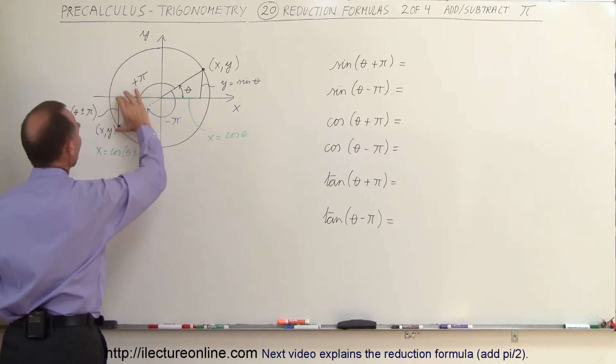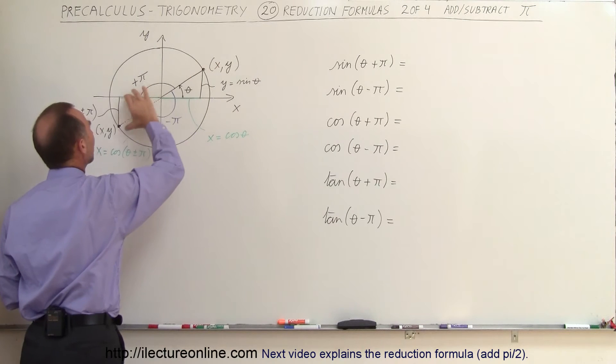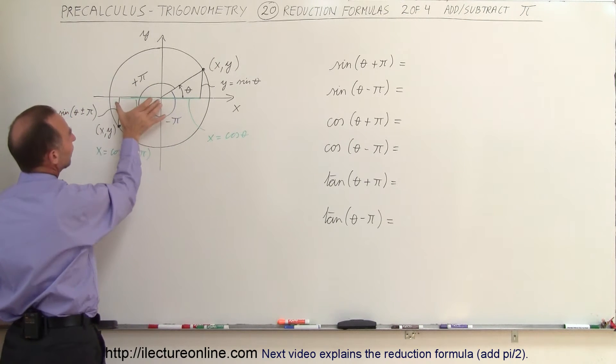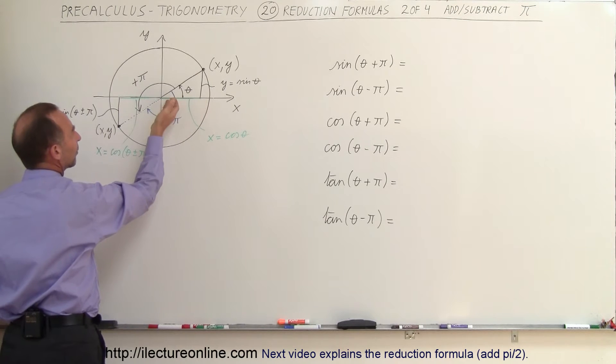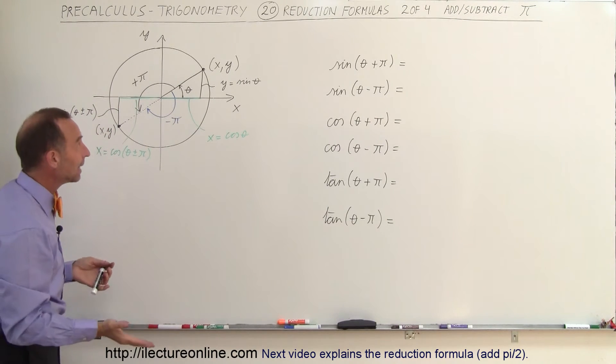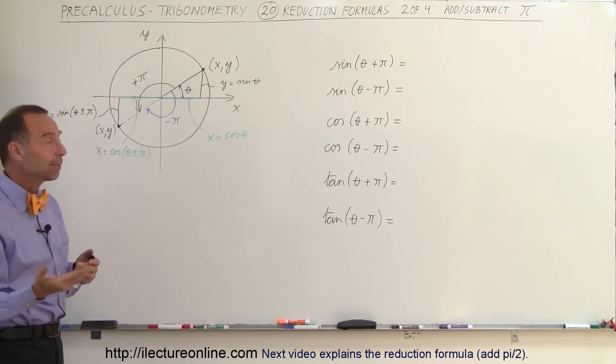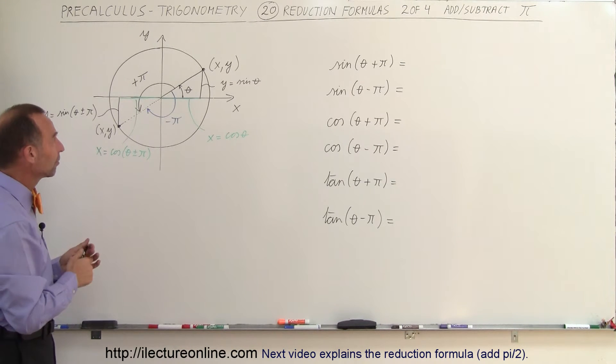So notice that the y value is the same as the y value there but it's negative. Also notice that the cosine, the x value here, is the same as the x value there but it's on the negative side. So that means that by adding pi the sine becomes negative and the cosine becomes negative.